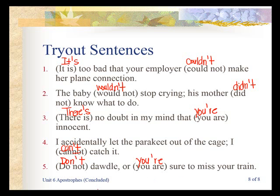When using contractions, especially in the South, be sure you're using the right form. For example, for 'would not' the contraction is 'wouldn't,' not 'won't'; and for 'did not' it's 'didn't,' not 'don't.' Sometimes people get confused once they move into contraction form. If that's a problem for you, it's best to write it out without the contraction first, then change it if you want to make it less formal and more casual. That's the end of our apostrophes and the end of day 20. Thank you.